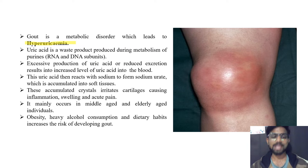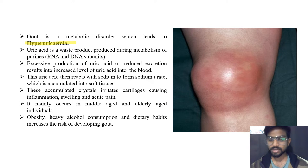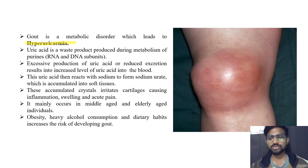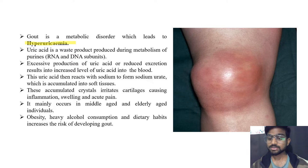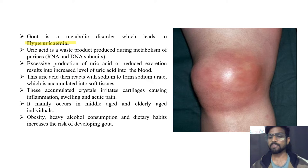These accumulated crystals irritate the cartilage, causing inflammation, swelling, and acute pain. As we can see in the image, there is accumulation of uric acid crystals in the knee joint causing inflammation. Gout mainly occurs in middle-aged and elderly individuals, who are more prone to this disease. People with obesity, heavy alcohol consumption, and certain dietary habits are at high risk.